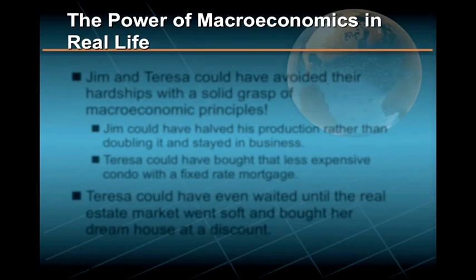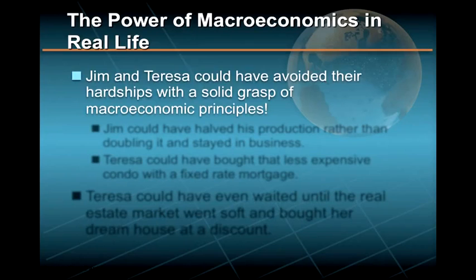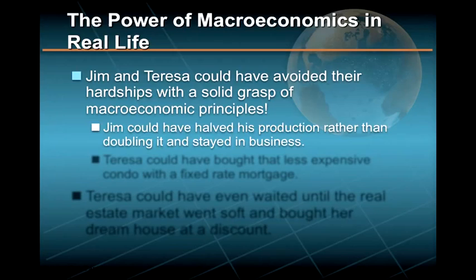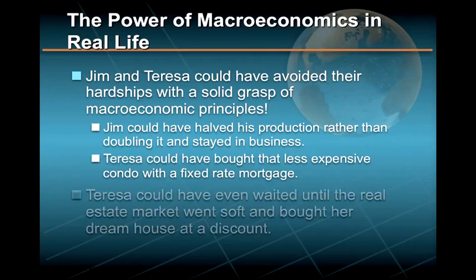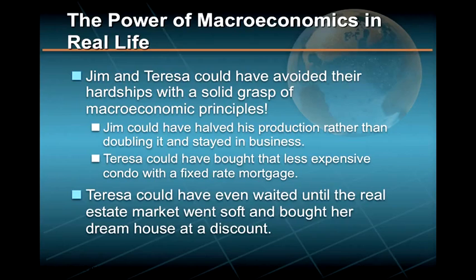The tragedy is that both Jim and Teresa could have avoided their hardships if they had only been armed with the power of macroeconomics. Anticipating increased competition and a recession, Jim could have halved his production rather than doubling it, and he'd still be in business today. And Teresa could have either bought that less expensive condo with a fixed-rate mortgage, or, better yet, waited until the real estate market went soft and bought her dream house at an affordable price.